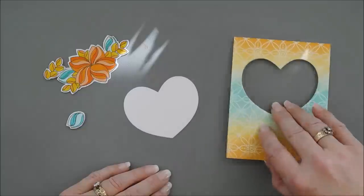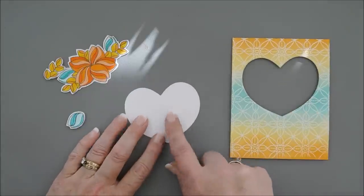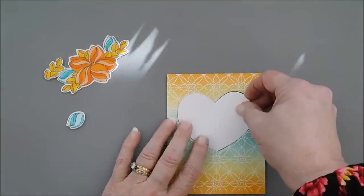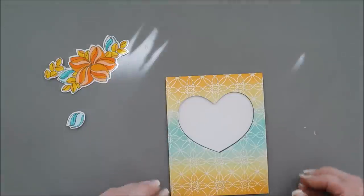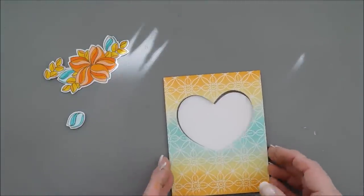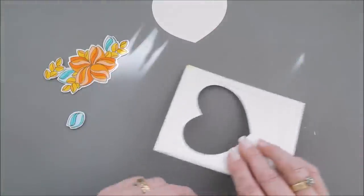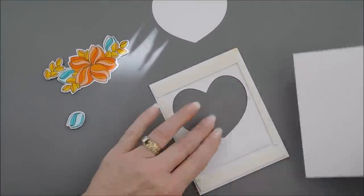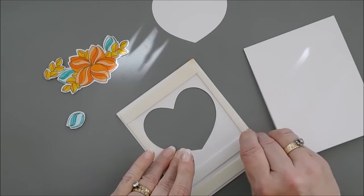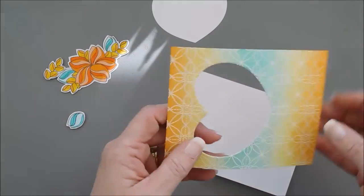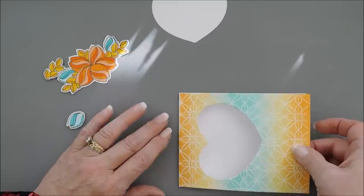I went ahead and put foam tape behind here, and I also die cut out a heart. I thought putting a heart with my sentiment on it would be a lot easier than trying to stamp it directly on my card base. So let's go ahead and remove the release paper and put this on the standard A2 size card base. And this is a card front panel, so it's going to fit this beautifully.